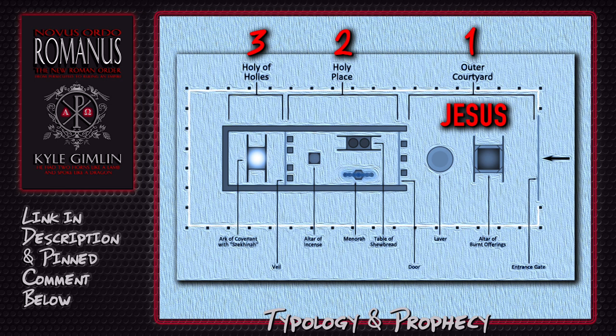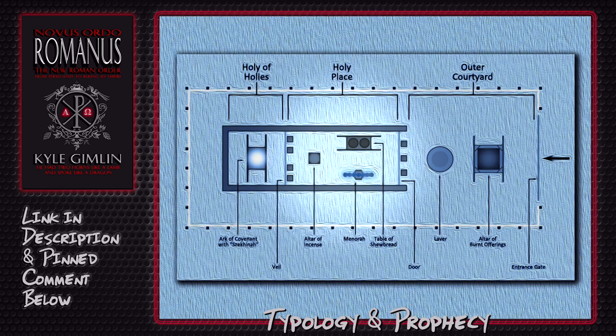But does this mean that the God with us promise came to an end with the start of the New Covenant, which saw Jesus — after the resurrection — return to heaven? How can we say that God is with us if Jesus is no longer here on earth but rather up in heaven? Let's answer that by moving on into the tabernacle building itself and considering the typology of the holy place.